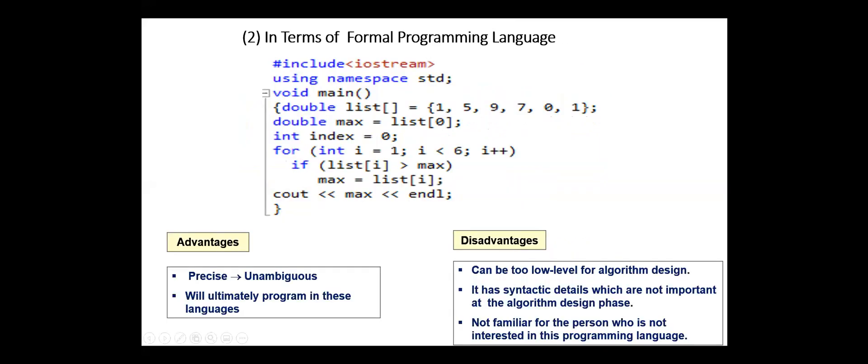The second method used to represent algorithms is in terms of formal programming language. Here the algorithm is coded using one of the programming languages such as C++, Python, Java, and others.